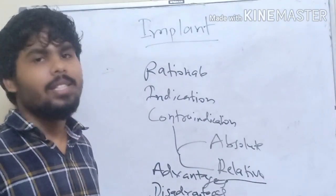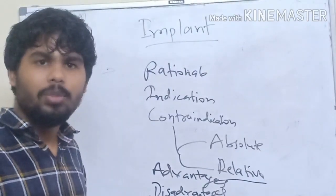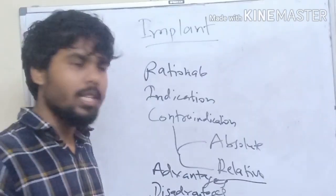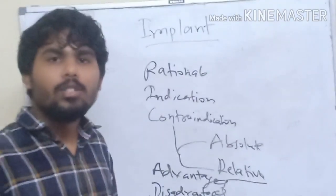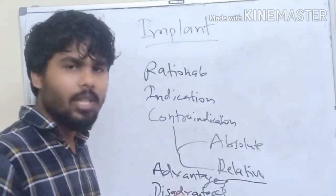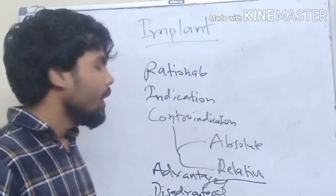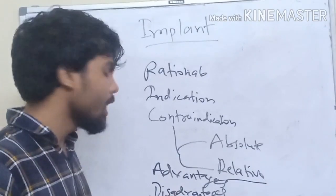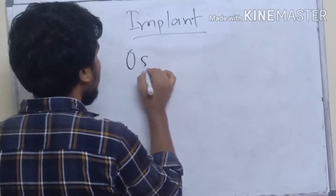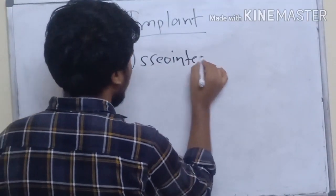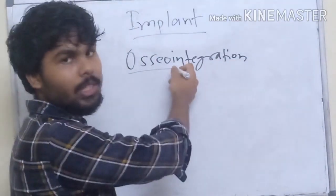Disadvantages of using implants: implants are expensive, costing nearly 40,000 to 50,000 at government hospitals and much more at private hospitals. They are also time-consuming, taking four to six months or even one year for the total treatment protocol. Additionally, implants are technique-sensitive.